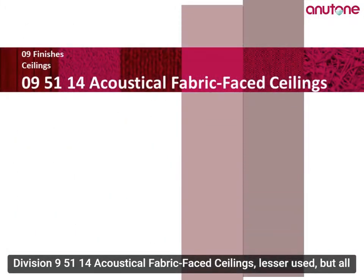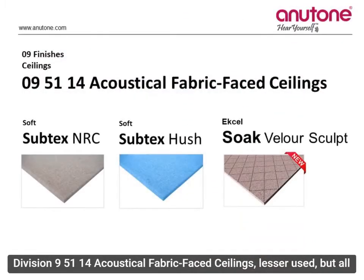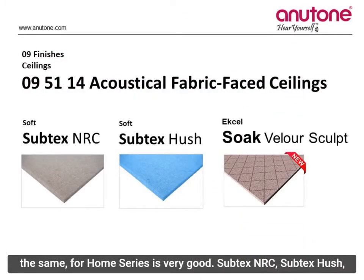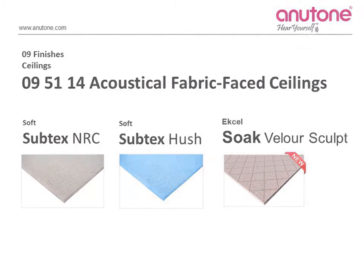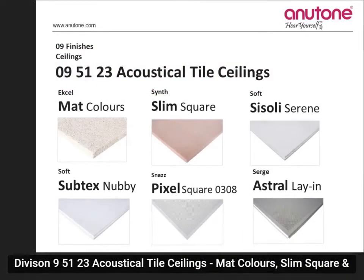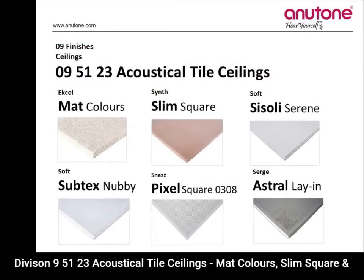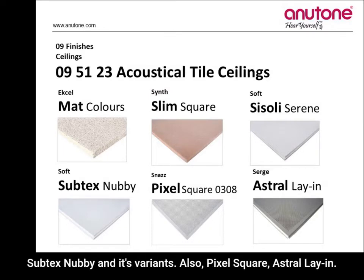Division 9, 5114 is Acoustical Fabric-Faced Ceilings — lesser used, but all the same, very good for the home series: Subtext NRC, Subtext Hush, Soak, Velour, Sculpt. Division 9, 5123 is Acoustical Tile Ceilings, and its variations include Slim Graphics, Slim Sculpt, Siswali Serene, Subtext Nabi and its variations, Pixel Square, and Astral Lay-In.